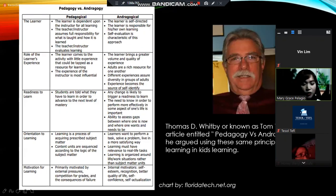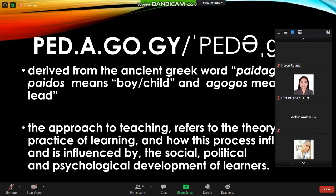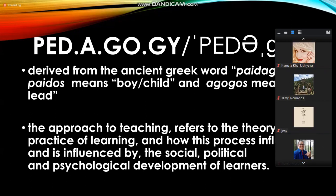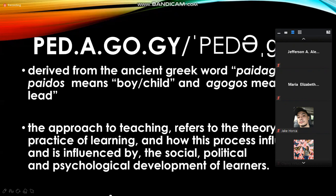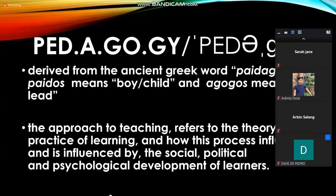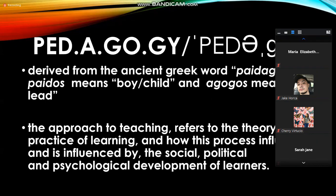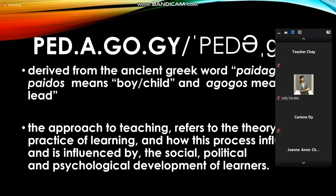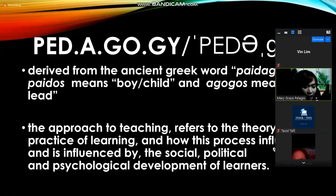The social environment gives the interaction or the capacity of students to interact with other individuals and learners. Politically, it is how the government influences the education sector in terms of what curriculum to use. Psychologically, it includes the schema or prior knowledge of learners — the mind of the child as a language acquisition device in terms of language learning and teaching. Since this literally pertains to children, how about adults? Let's learn about adult learning.